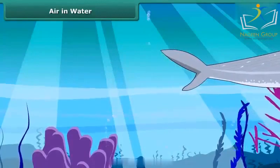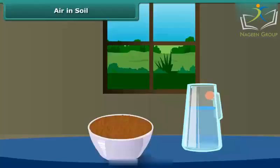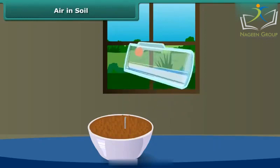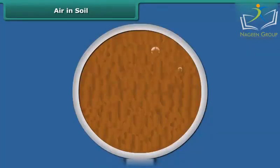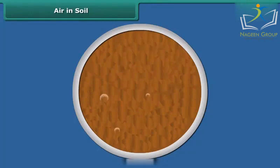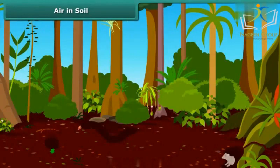How do the organisms living in soil get oxygen? To know this, take some soil in a bowl and pour some water on it. What do you see? You can see that air bubbles are coming out of the soil. When water is added to the soil, it replaces the air present in the soil, and that air comes out as bubbles.